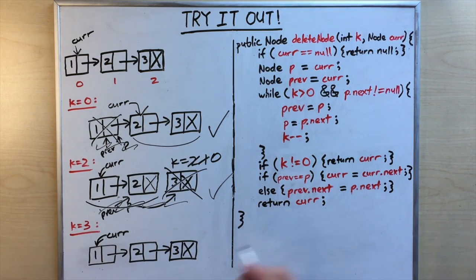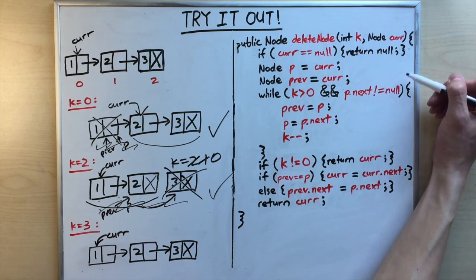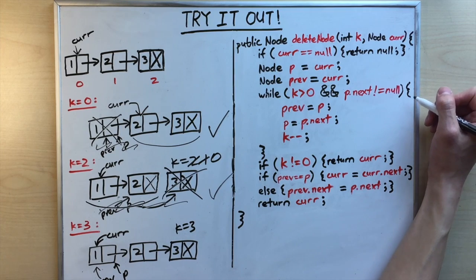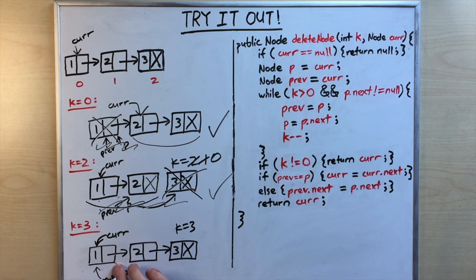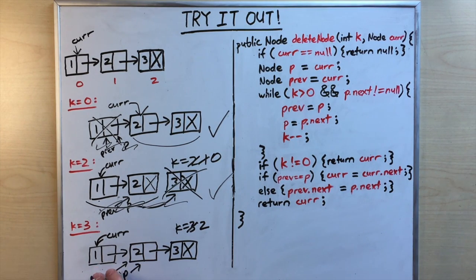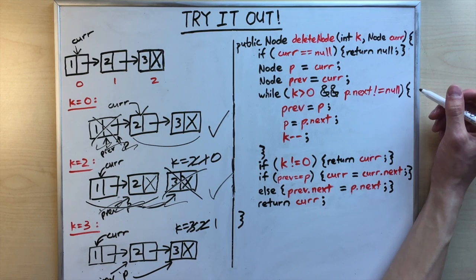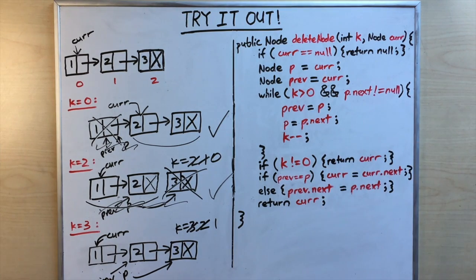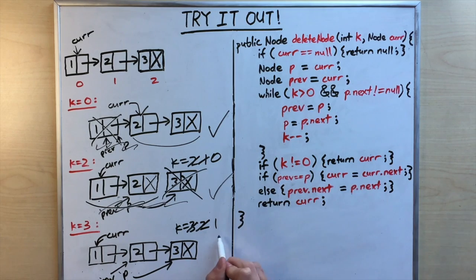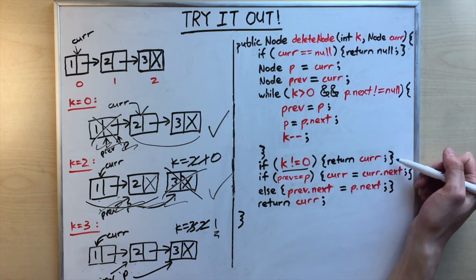For k equals three: p and prev start at cur. The loop runs, moving p forward and decrementing k. When p reaches the last node, p.next equals null, so the loop exits with k still equal to one — not zero. We check if k does not equal zero — true — so we return cur unchanged. No deletion occurs.